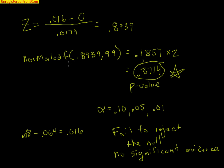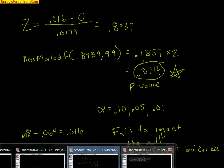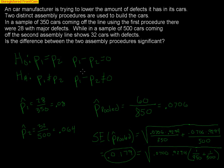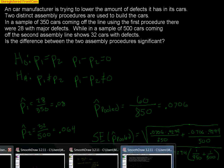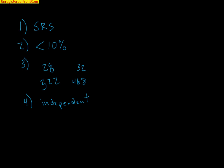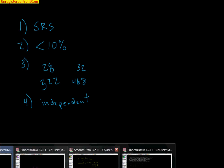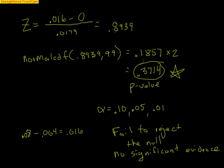Remember the four steps: Step 1 — state your hypotheses. Step 2 — check the conditions. Step 3 — show your work: standard error, z-score, and p-value. Step 4 — state your conclusion. Here, the conclusion is to fail to reject the null; there is no significant evidence of a difference between the two assembly procedures.